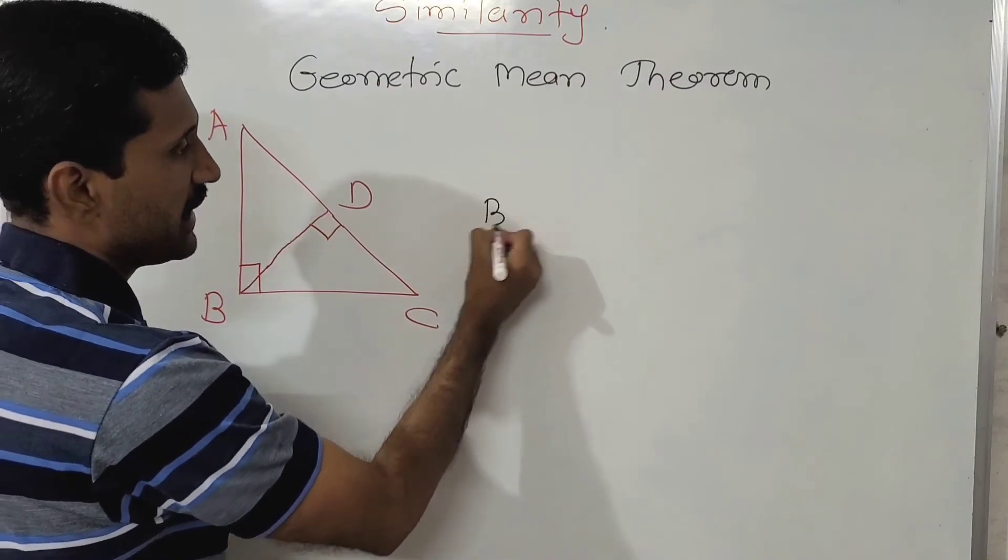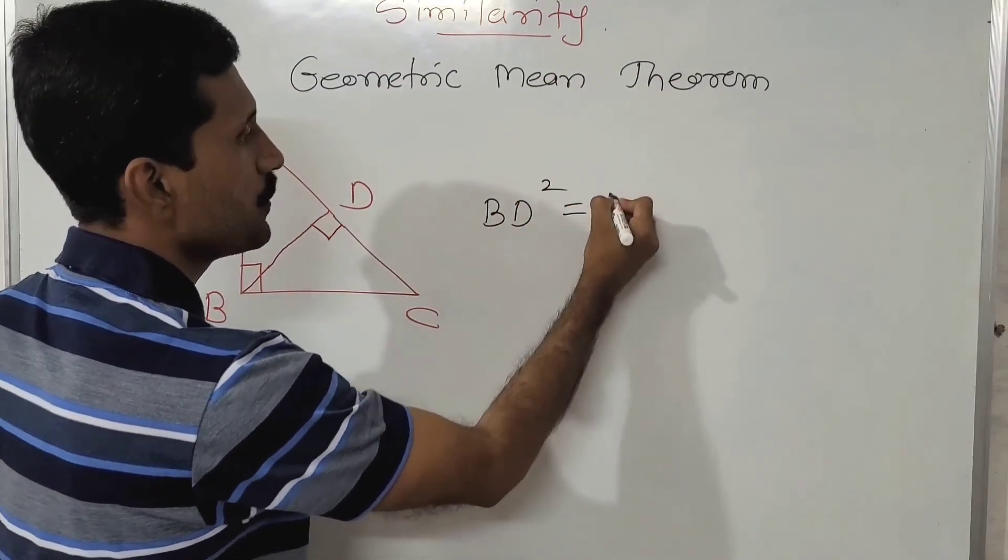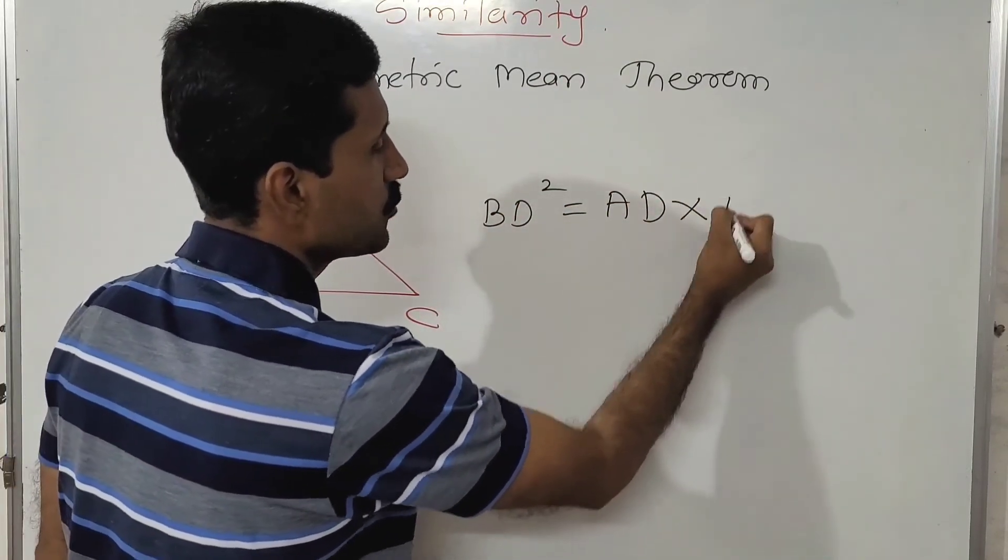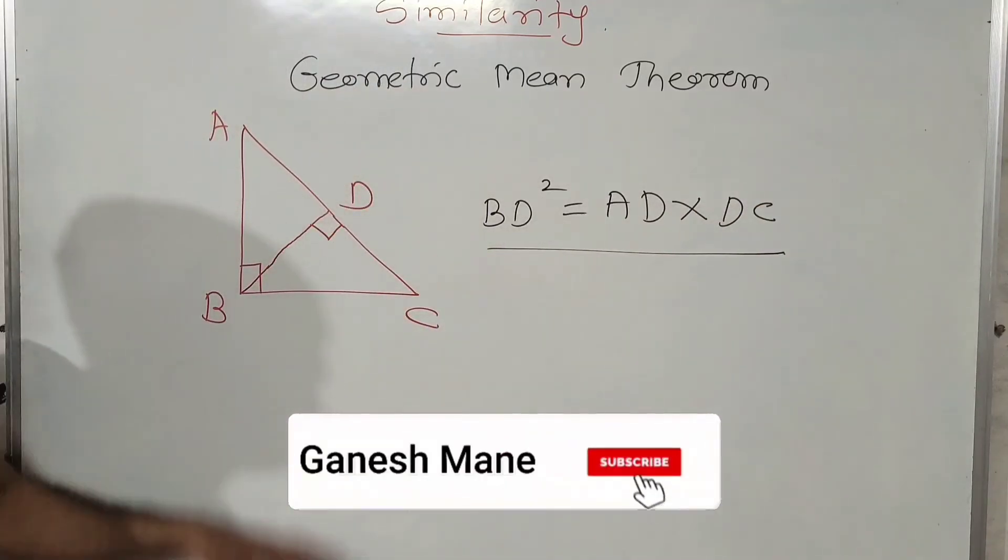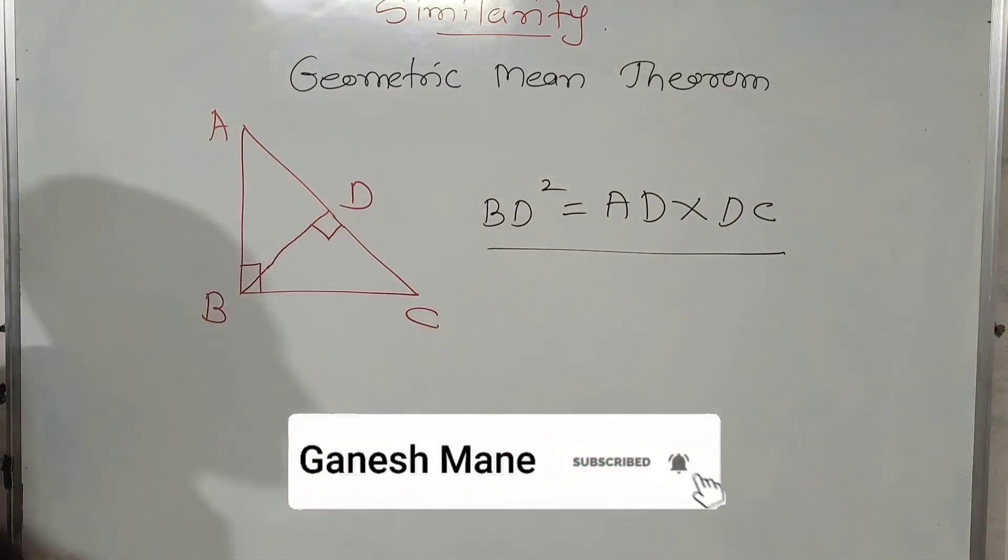By the geometric mean theorem, we can write BD² = AD × DC. This is the geometric mean theorem for a right angle triangle.